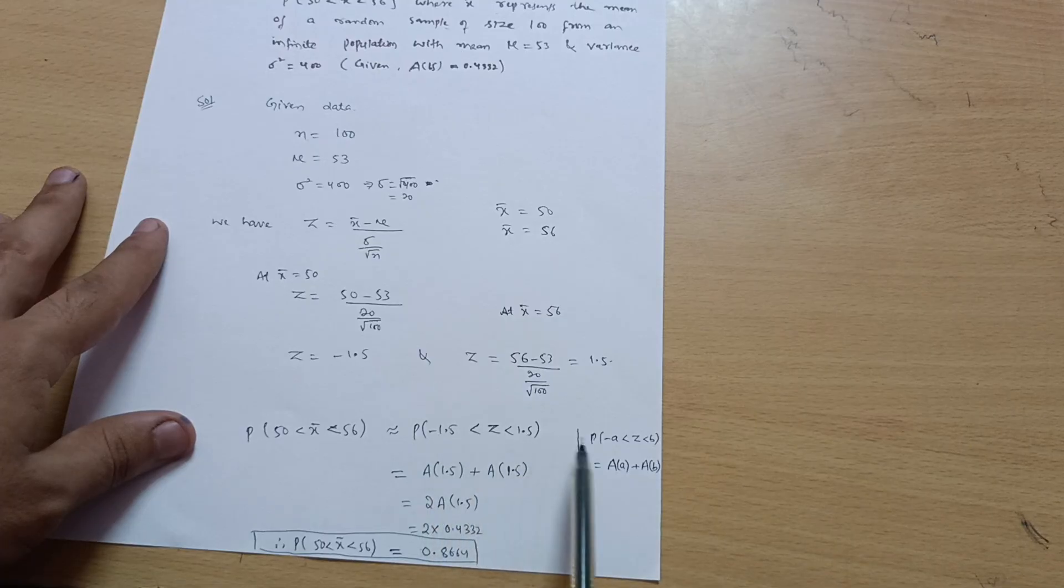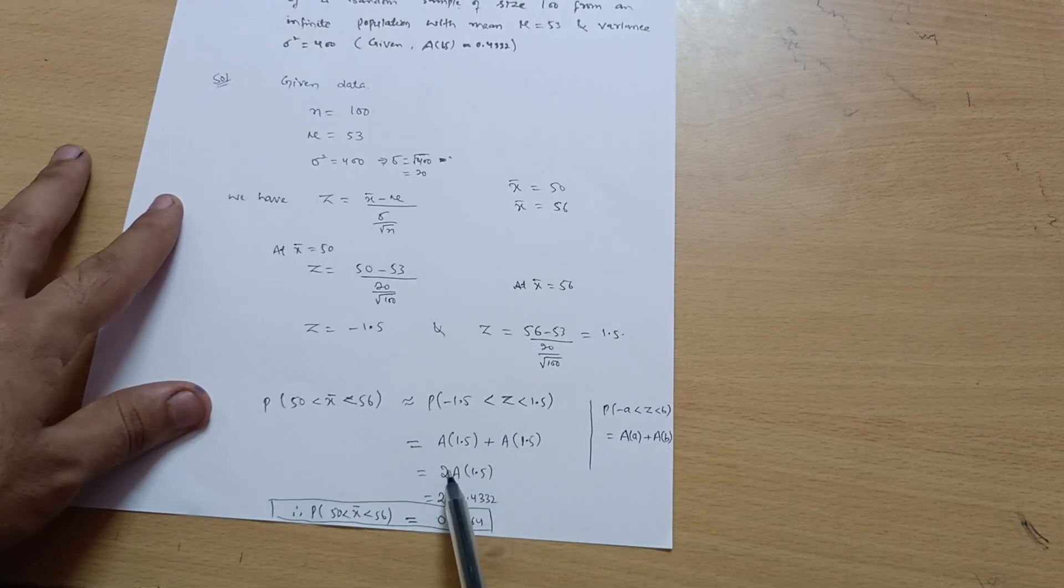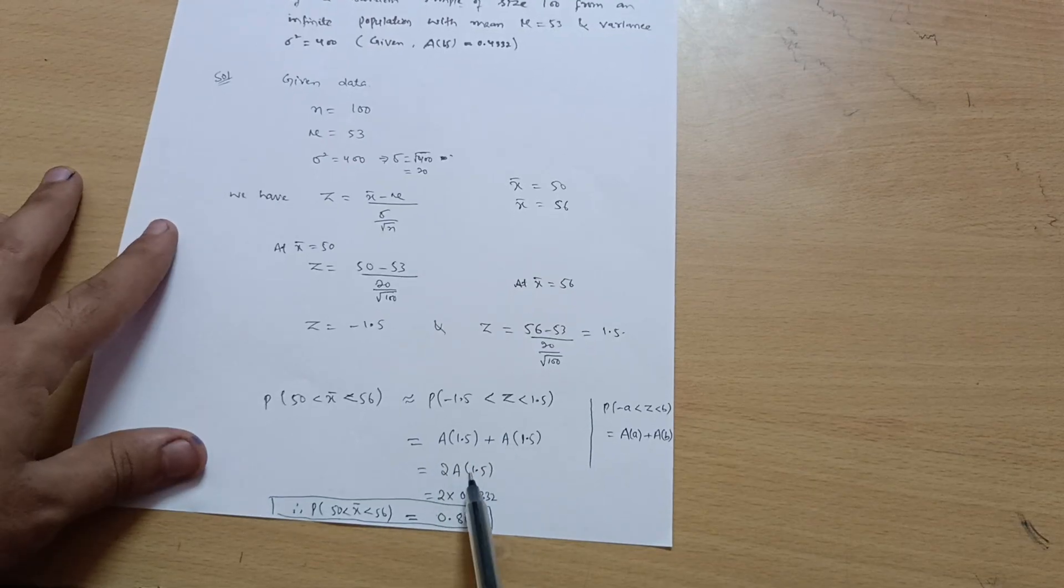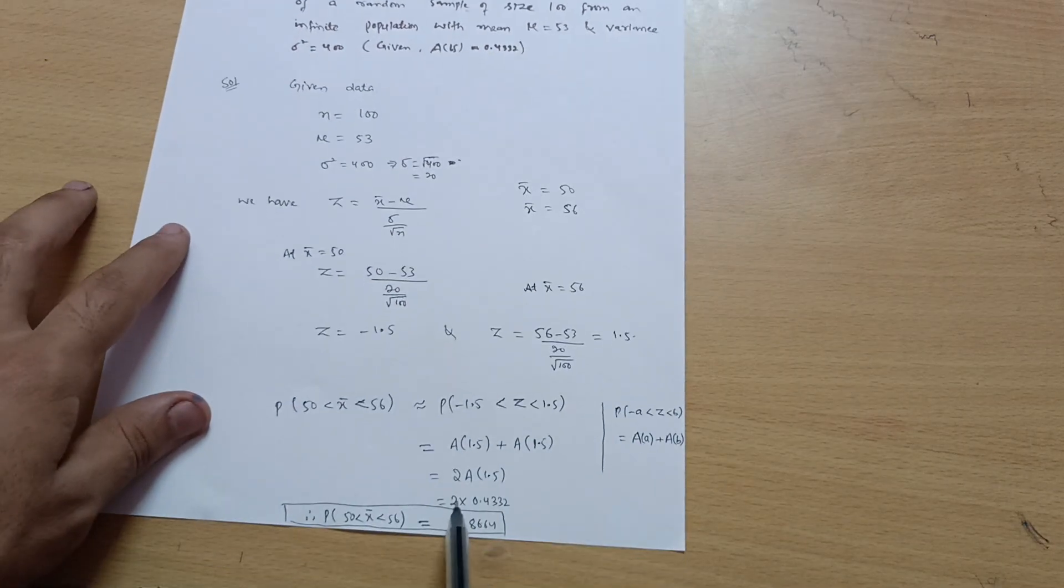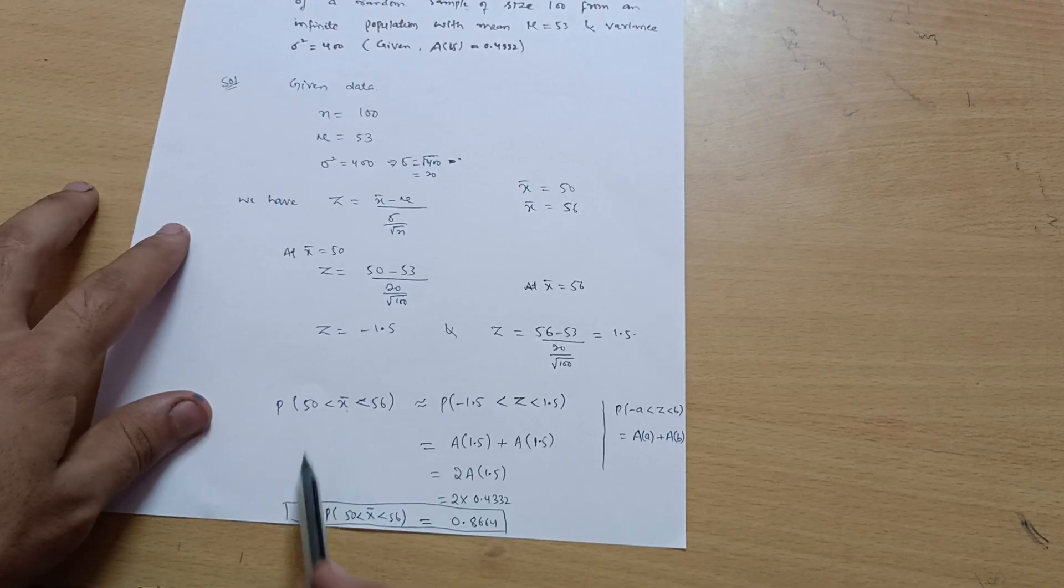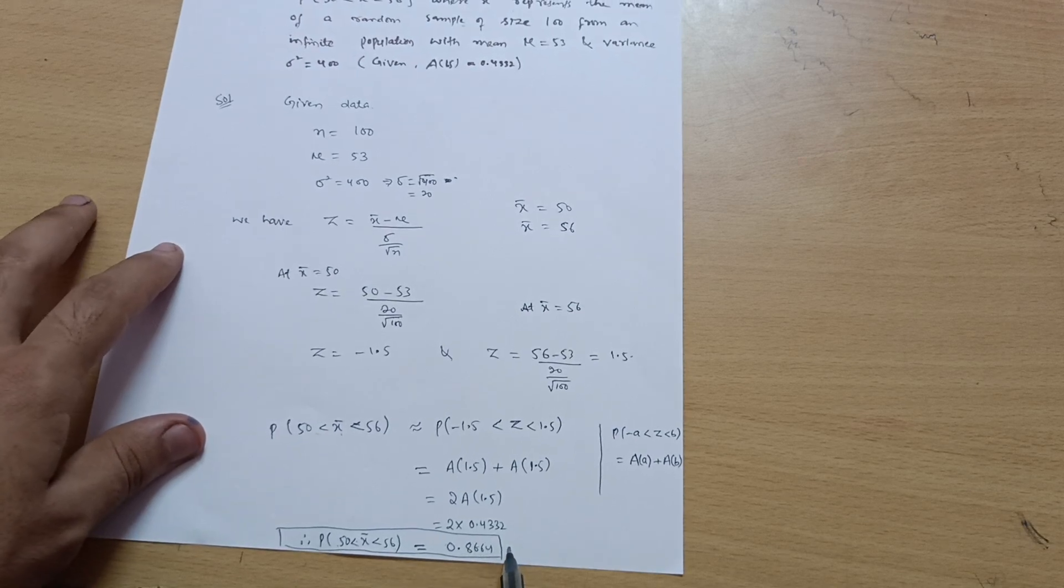What I should write: A(1.5) plus A(1.5). This is twice A(1.5). And this A(1.5) value is given in the problem: 0.4332. So 2 × 0.4332, you will get P(50 < X̄ < 56) = 0.8664. This is the answer for this particular question.